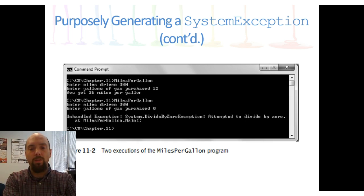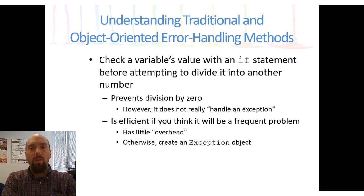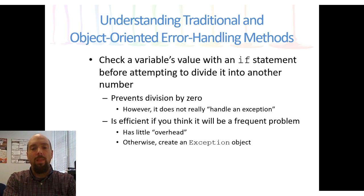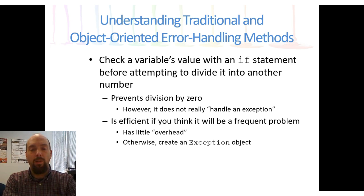We can take that error message and use it to our advantage. Instead of letting the entire program crash, we just want to grab that error message. We could use an if-then statement — the old way — where if the number of gallons is greater than zero, then we divide. But this is fairly inefficient and will cause our code to contain a lot more evaluations than necessary. However, if we frequently expect people to forget input, an if-then statement will actually be a little faster than the exception methods available to us.